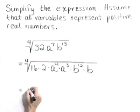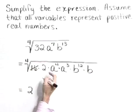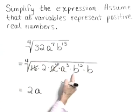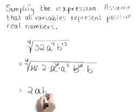So let's clean this up further. The fourth root of 16 is 2. That 2 came out. The fourth root of a to the fourth is a. That's gone. And the fourth root of b to the twelfth is b to the third.